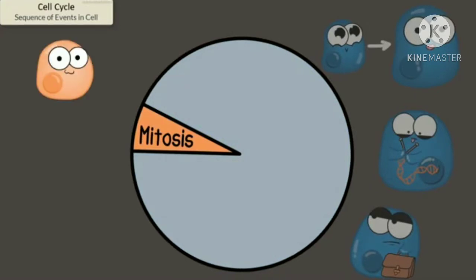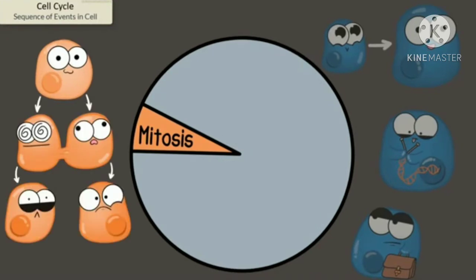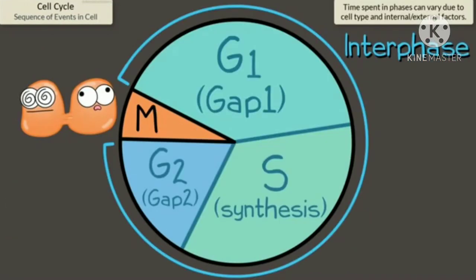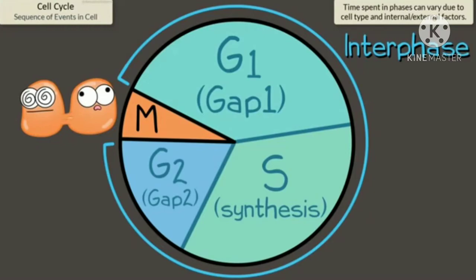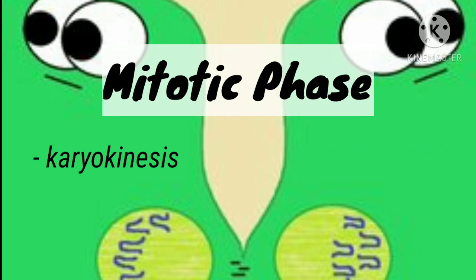The mitotic phase is a multi-step process during which the duplicated chromosomes are aligned, separated, and moved into two new identical daughter cells. The first portion of the mitotic phase is called karyokinesis, or nuclear division. The second portion, called cytokinesis, is the physical separation of the cytoplasmic components into the two daughter cells.